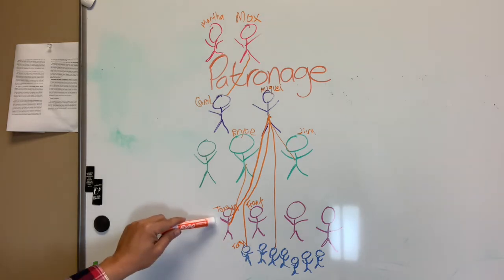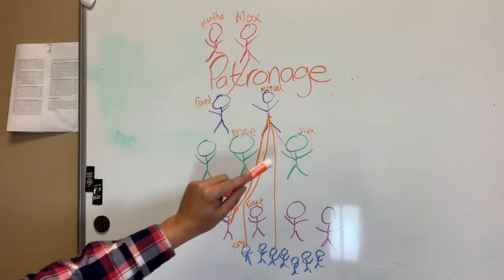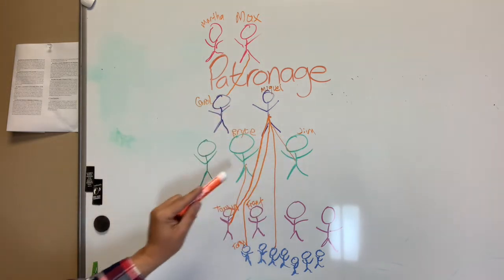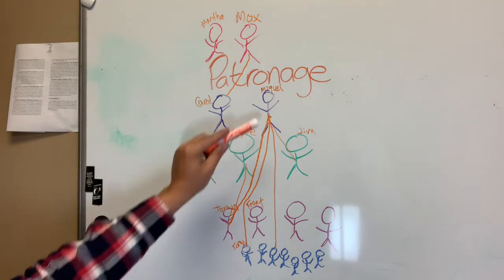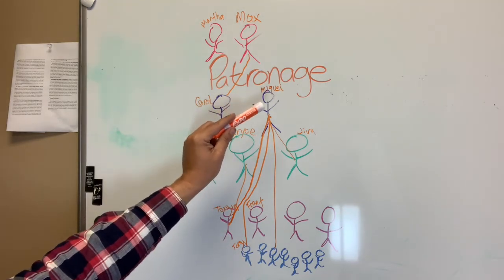So in this case, because Tony and Tanya and Jim all are clients of the patron Miguel, Jim, Tanya and Tony, although they are in different horizontal classes in society, would actually find their identification as the same because they are all clients of Miguel. And that is where they would find their social identity.